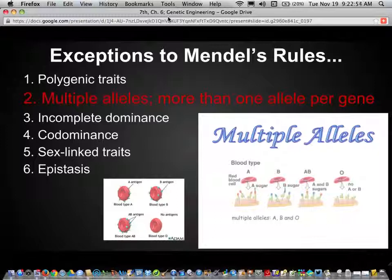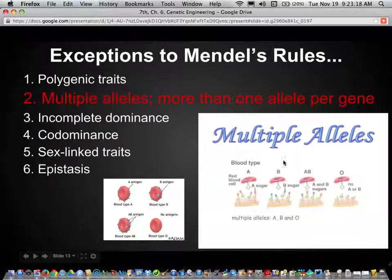Multiple alleles are just that. Multiple alleles means that a trait is determined by more than one allele per gene, and the blood typing system that we have is a perfect example of that. Let me explain that just a little bit here.